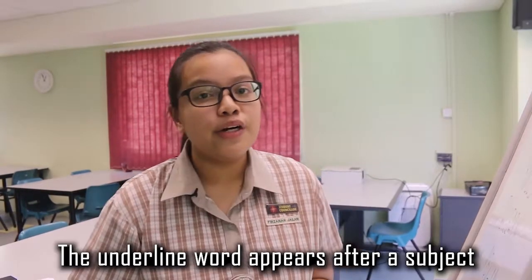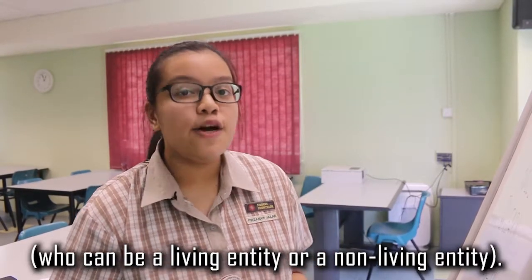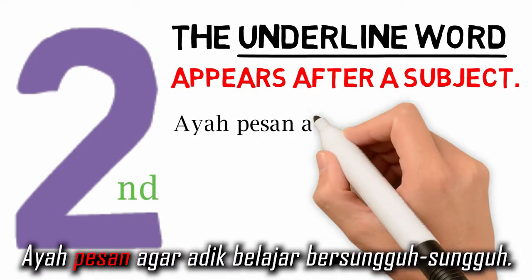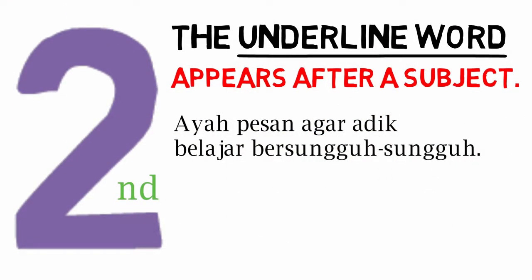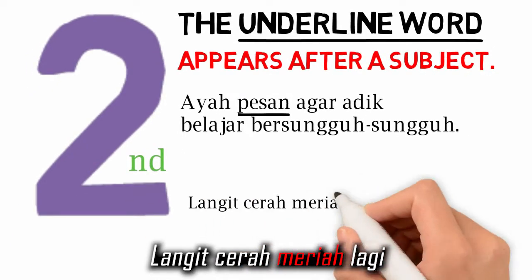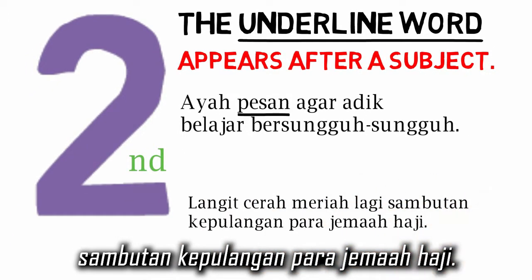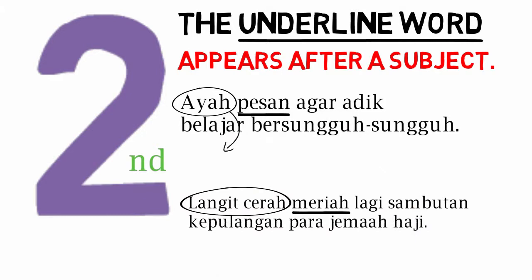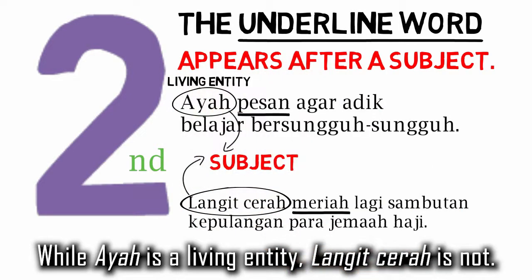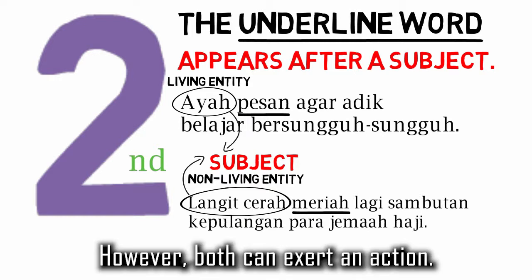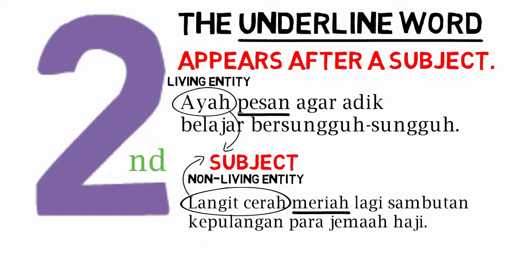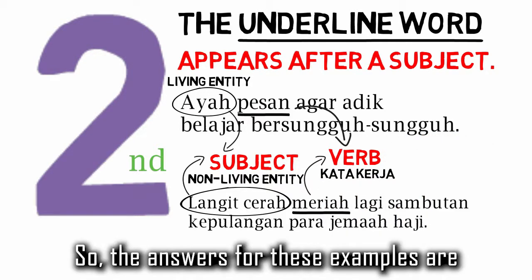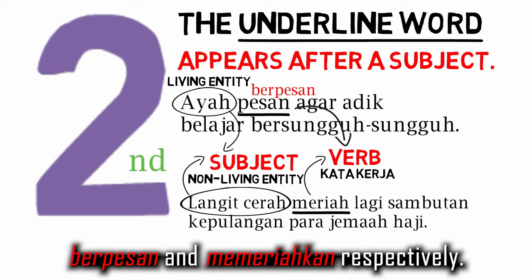The second rule: the underlined word appears after a subject who can be a living entity or a non-living entity. For example, 'Ayah pesan agar adik belajar bersungguh-sungguh' and 'Langit Cerah, meriah lagi sambutan kepulangan para jemaah haji.' Both Ayah and Langit Cerah are subjects. While Ayah is a living entity, Langit Cerah is not. However, both can exert an action. Thus, the underlined words pesan and meriah have to be turned into verbs. So the answers for these examples are berpesan and memeriahkan respectively.